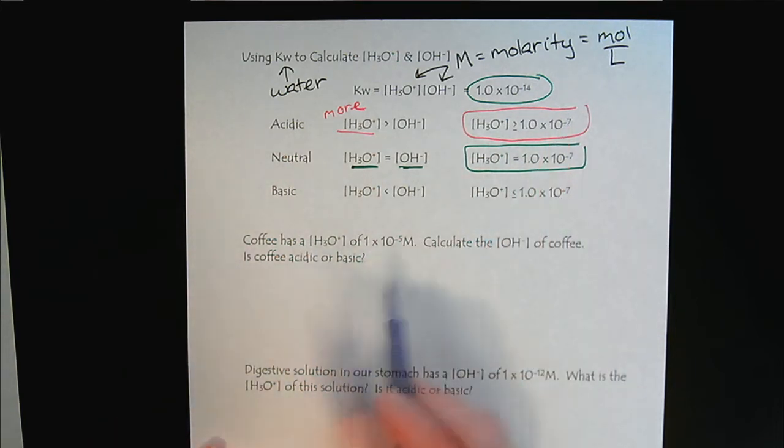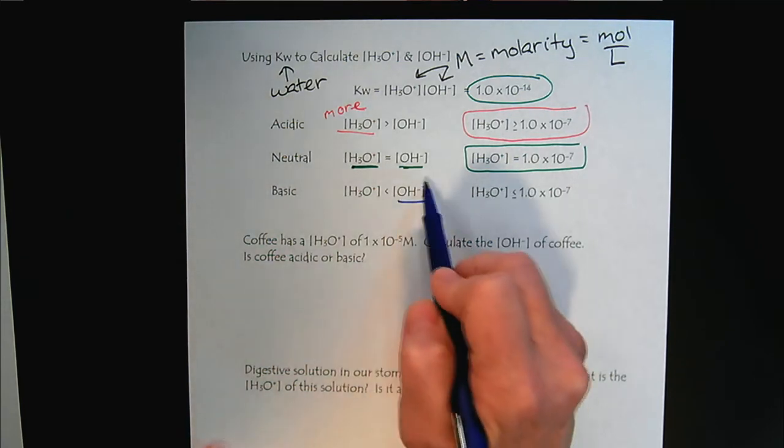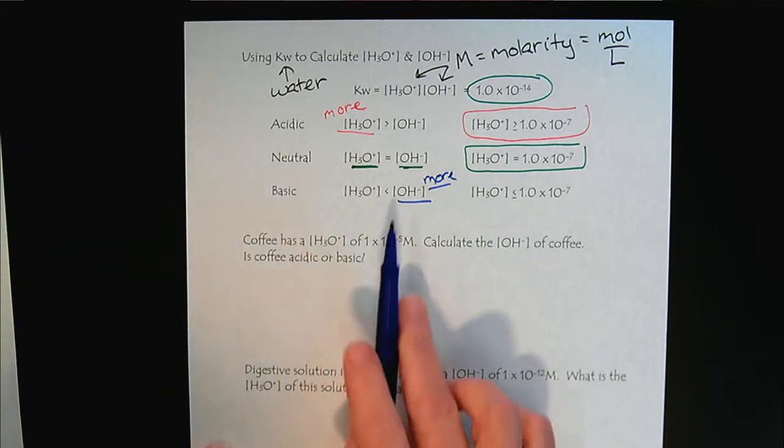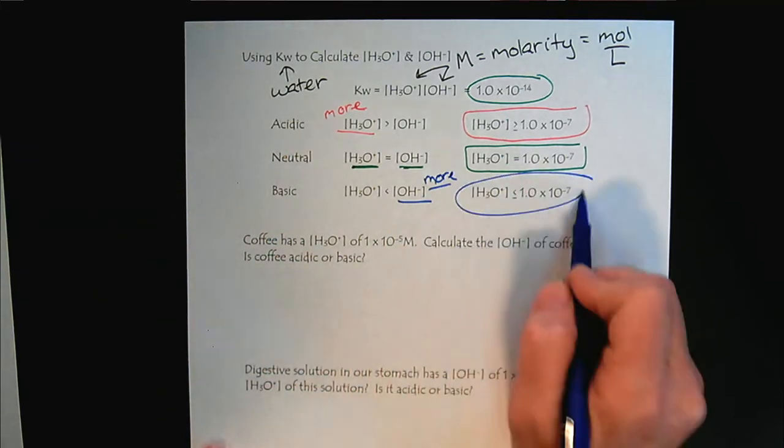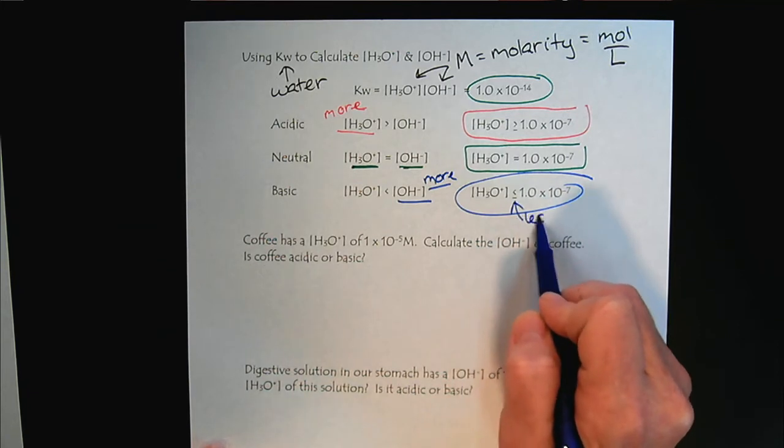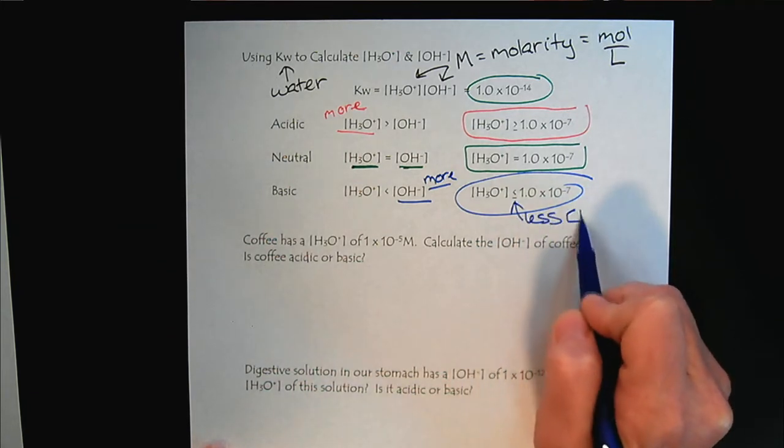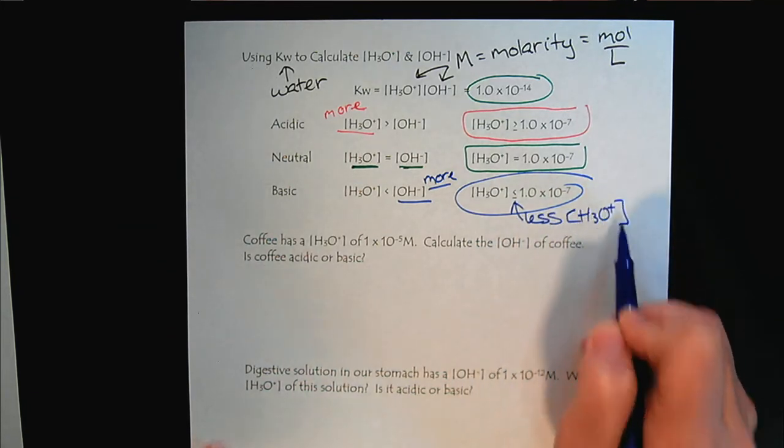And then for base, we will have a basic environment has more hydroxide. So if there's more hydroxide, that means we're going to have less hydronium.